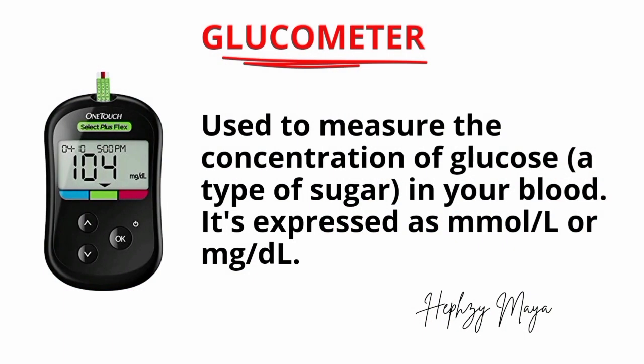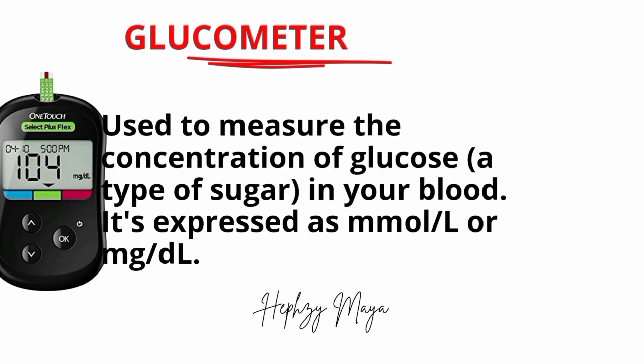Glucometer. It's used to measure the concentration of glucose — that is, a type of sugar in your blood. It's expressed as millimole per litre or milligram per deciliter.